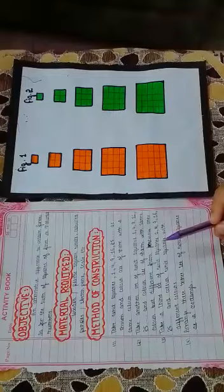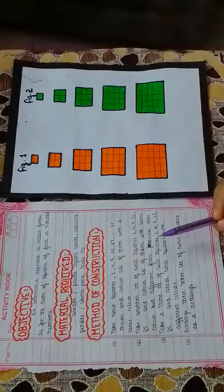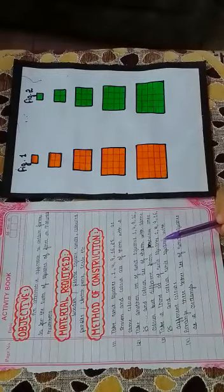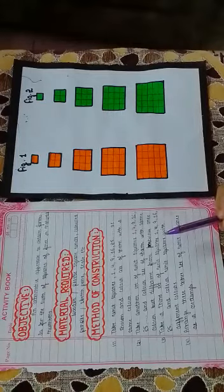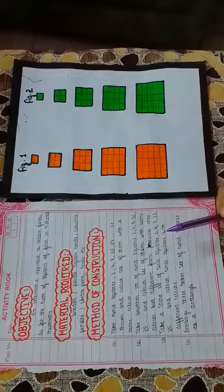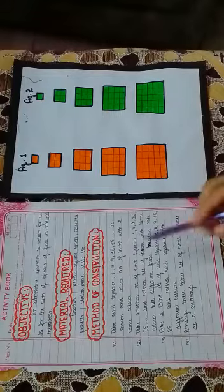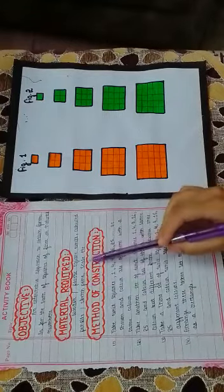So let's begin. This is the activity to find out the sum of squares of first n natural numbers. For this, the material required is colored pencils, sketch pens, scale, etc.